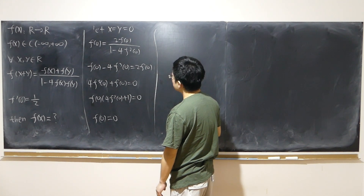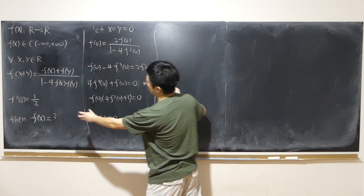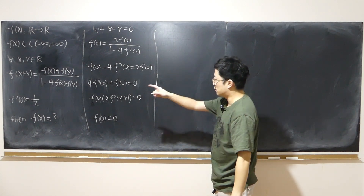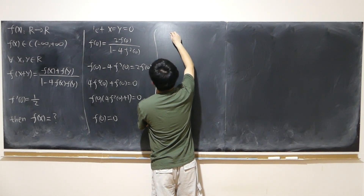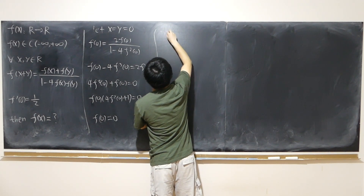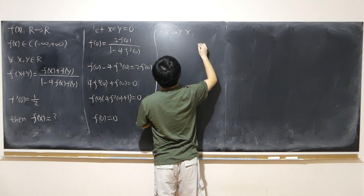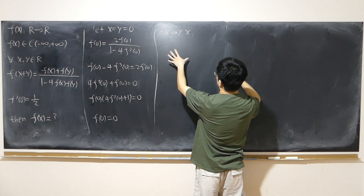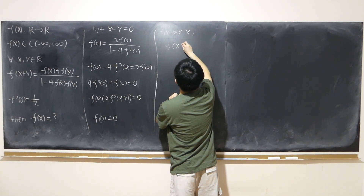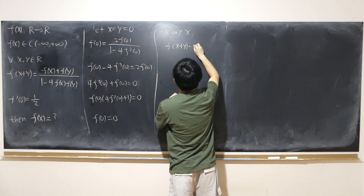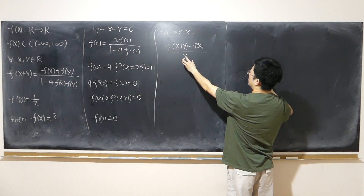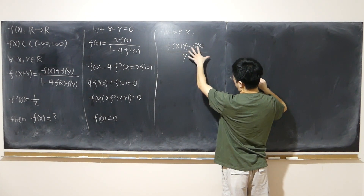We want to test whether f is differentiable over the entire number line, not just at 0. To find the derivative at some arbitrary fixed point x, we use the first principle: the derivative equals the limit of f(x+y) minus f(x) over y, as y approaches 0. If this limit exists, then f is differentiable.